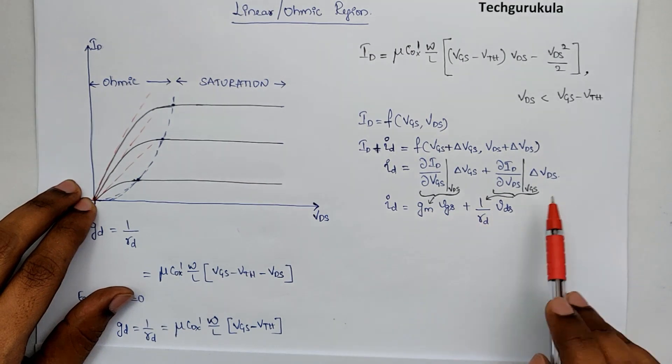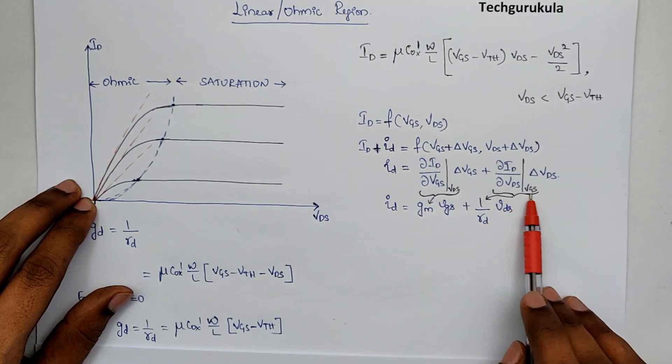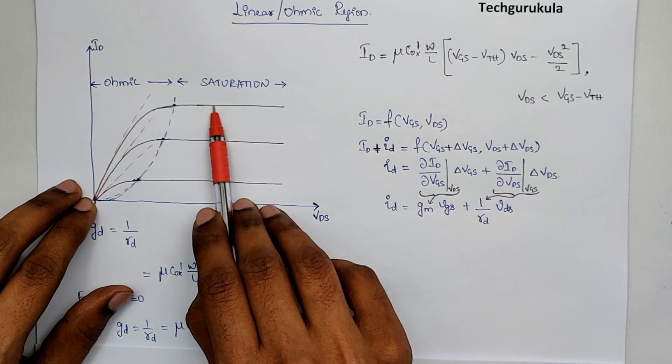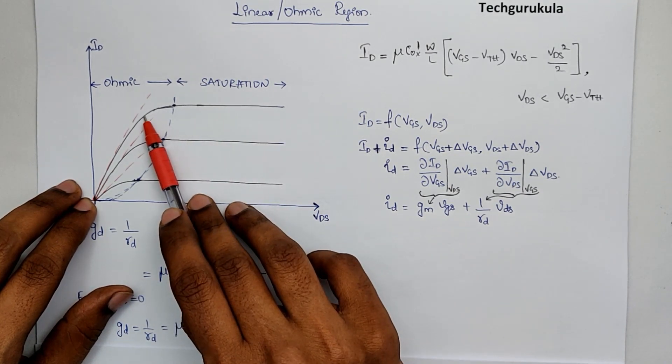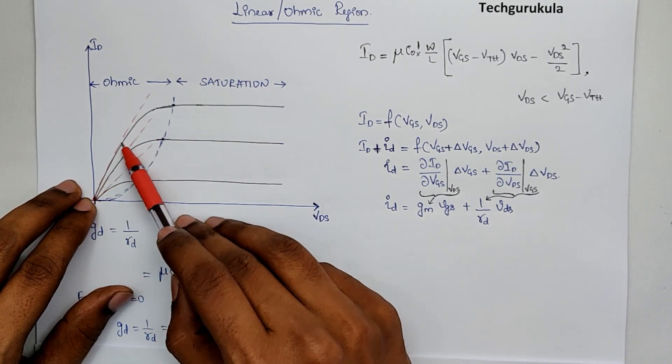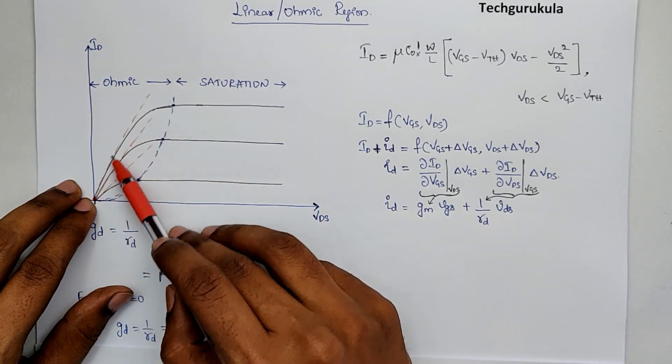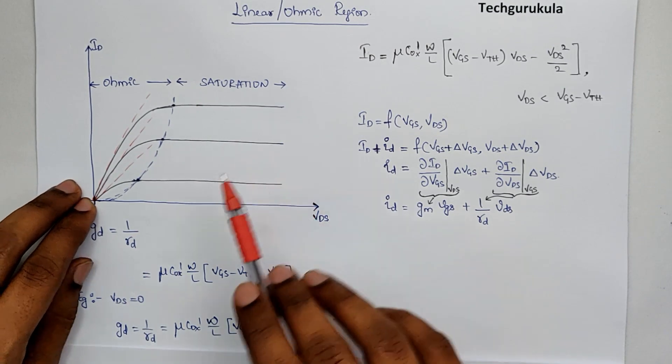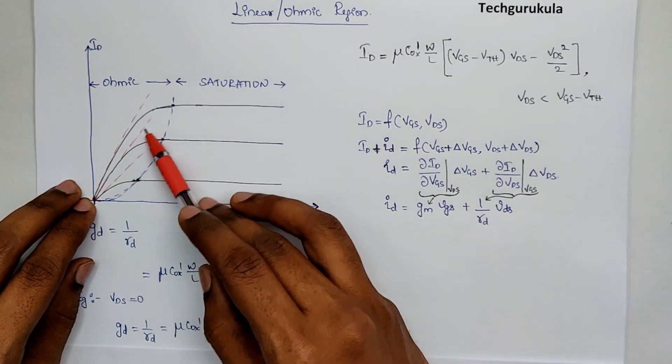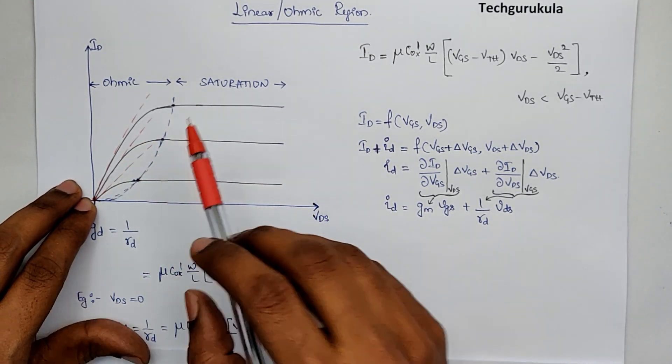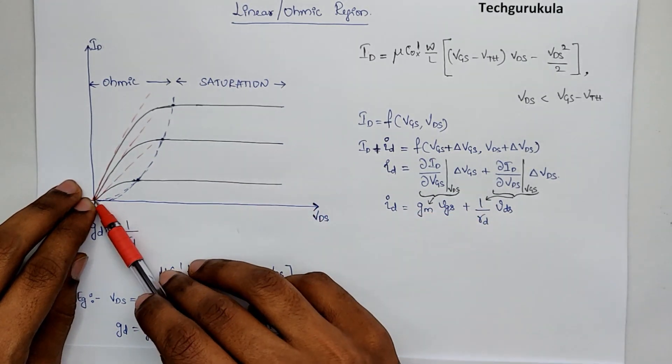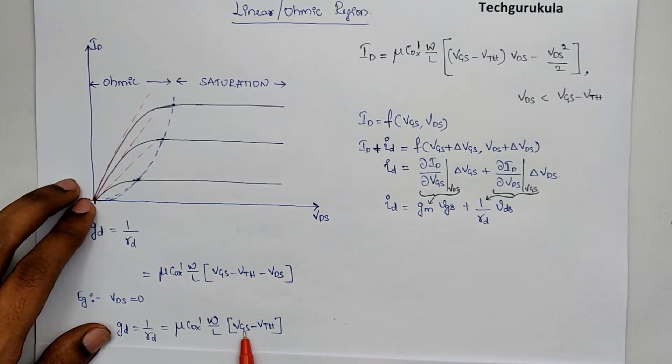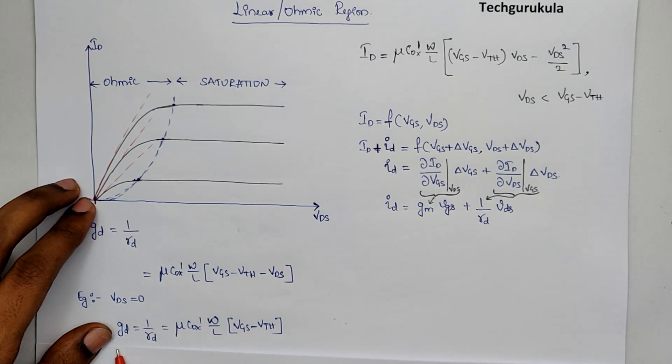Now, as we know, we have to check this value as VGS is changing. We know that VGS is higher here. As VGS is higher, the GD is higher, which is the slope. And as VGS is decreasing, the GD value is decreasing, which means the slope here is decreasing. And if we further decrease VGS, the GD value would decrease further. So, that's what the equation says. As VGS decreases, GD would decrease.